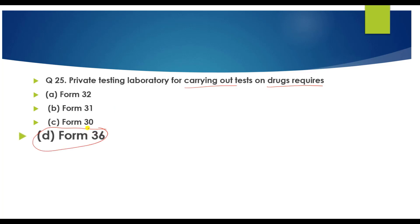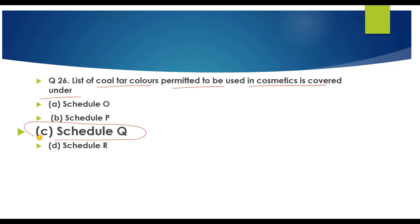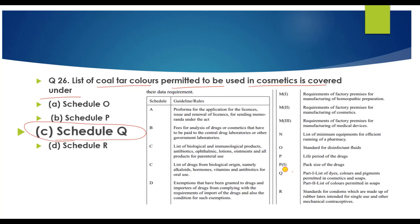Question number 26: List of coal tar colors permitted to be used in cosmetics is covered under Schedule Q. Schedule Q Part 1 covers dyes, colors, and pigments used in cosmetics or soap. Schedule Q Part 2 covers colors permitted in soaps.